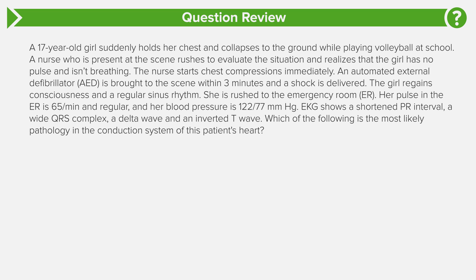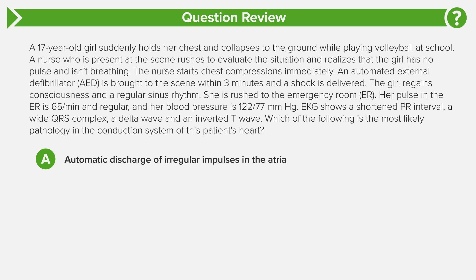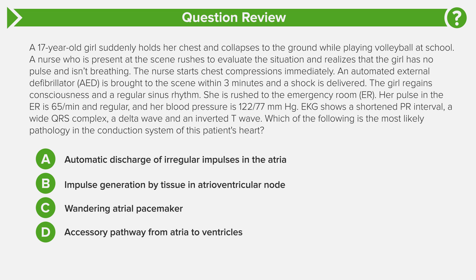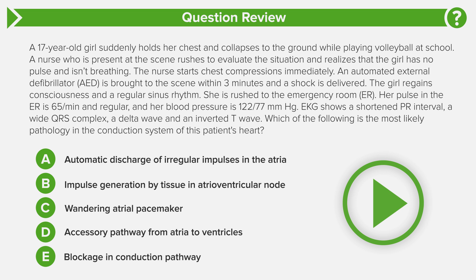The EKG also shows an inverted T wave. Which of the following is the most likely pathology in the conduction system of this patient's heart? Answer choice A: automatic discharge of irregular impulses in the atria. B: impulse generation by tissue in the AV node. C: wandering atrial pacemaker. D: accessory pathway from atria to ventricles. Or E: blockage in the conduction pathway.